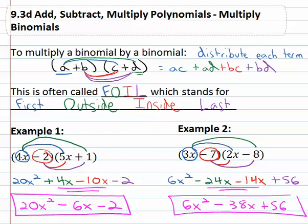So when we're multiplying two binomials together, all we have to do is take every term from the first polynomial and distribute it onto every term of the second binomial.